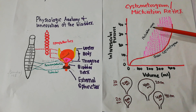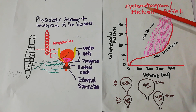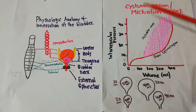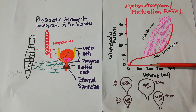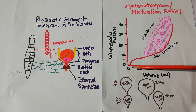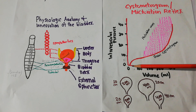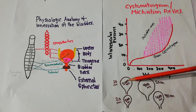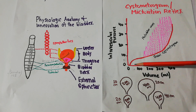What are micturition waves or micturition contractions? In our last lecture, we discussed in the cystometrogram that when the urine volume increases in the urinary bladder, the pressure in the urinary bladder also keeps on increasing.